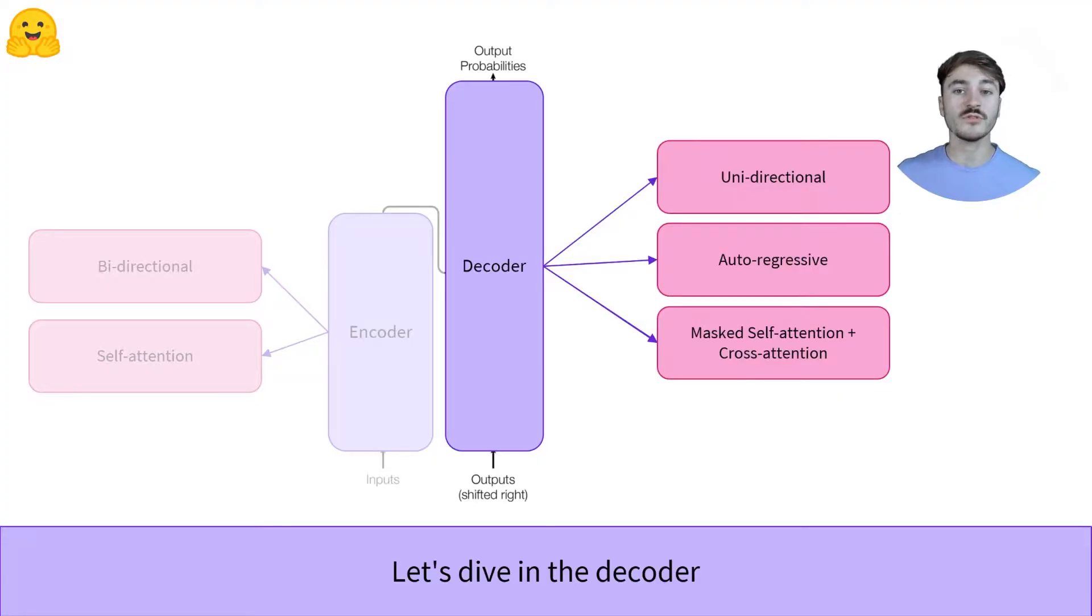One can use a decoder for most of the same tasks as an encoder, albeit with generally a little loss of performance. Let's take the same approach we have taken with the encoder to try and understand the architectural differences between an encoder and a decoder.